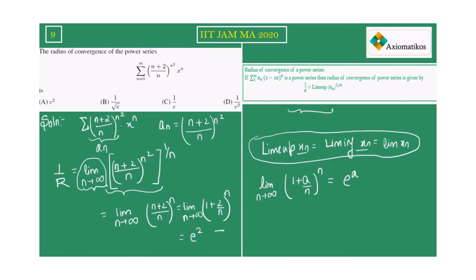Now since it's 1 by r, therefore r will be 1 over e². So this is your answer. This is a very easy question, totally dependent upon the formula for the radius of convergence. Thank you.